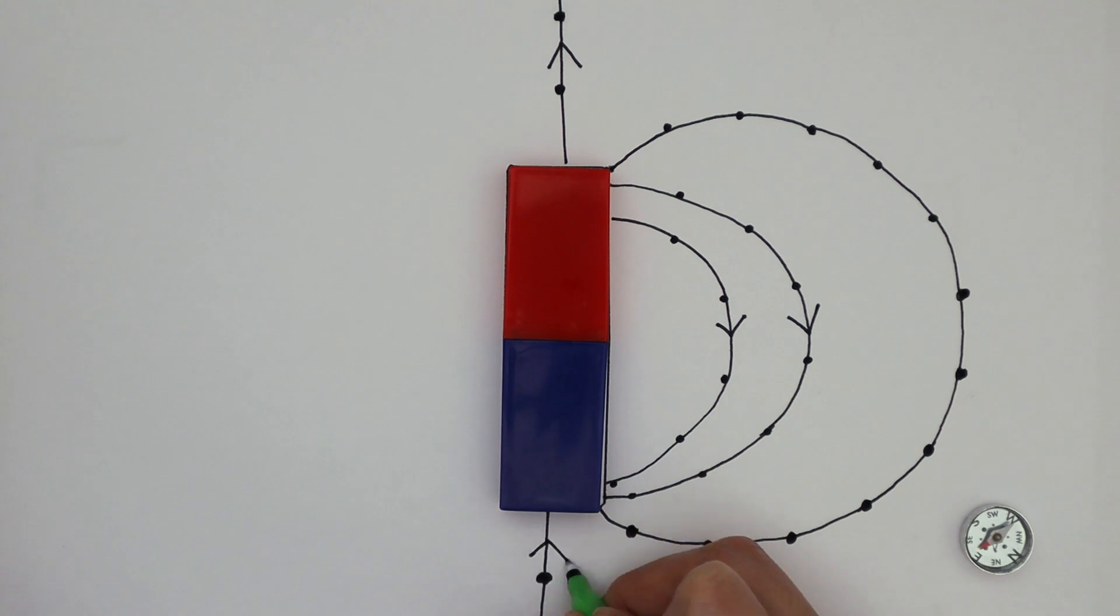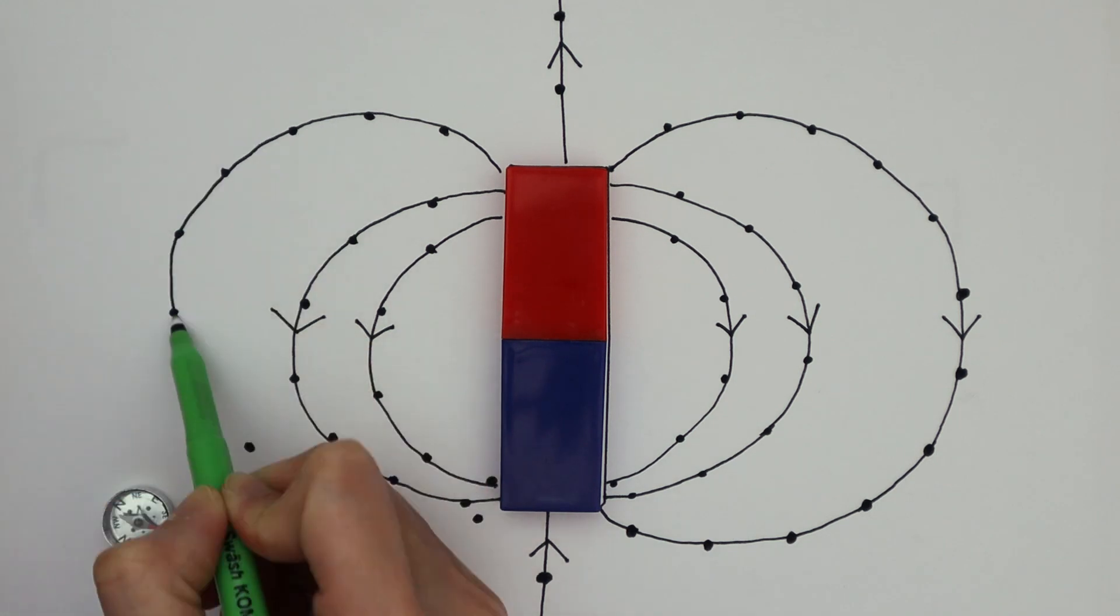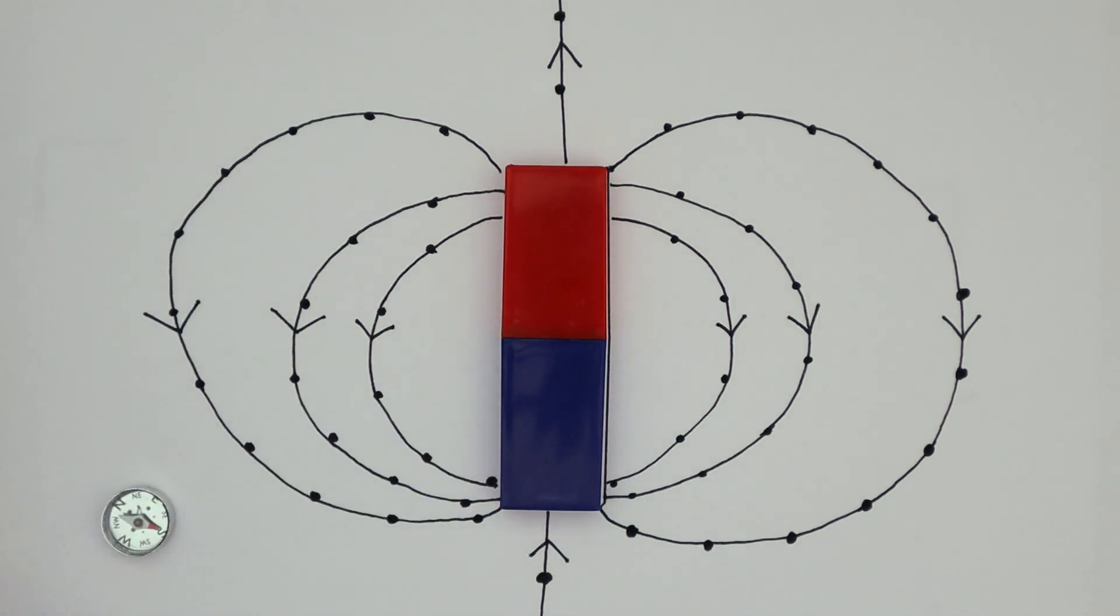Looking at the field that we've plotted, we can figure out the four main properties of magnetic field lines. Number one, magnetic field lines never cross each other. They never overlap.